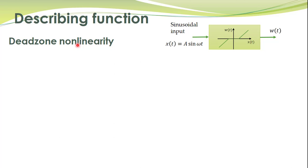We were talking about the second step — how to approximate the non-linearities with describing functions. We have talked about some non-linearities and obtained describing functions for those in previous lectures. In today's lecture we shall talk about one more non-linearity and obtain its describing function. The non-linearity we are going to deal with today is the dead zone non-linearity, which is also very common in physical processes.